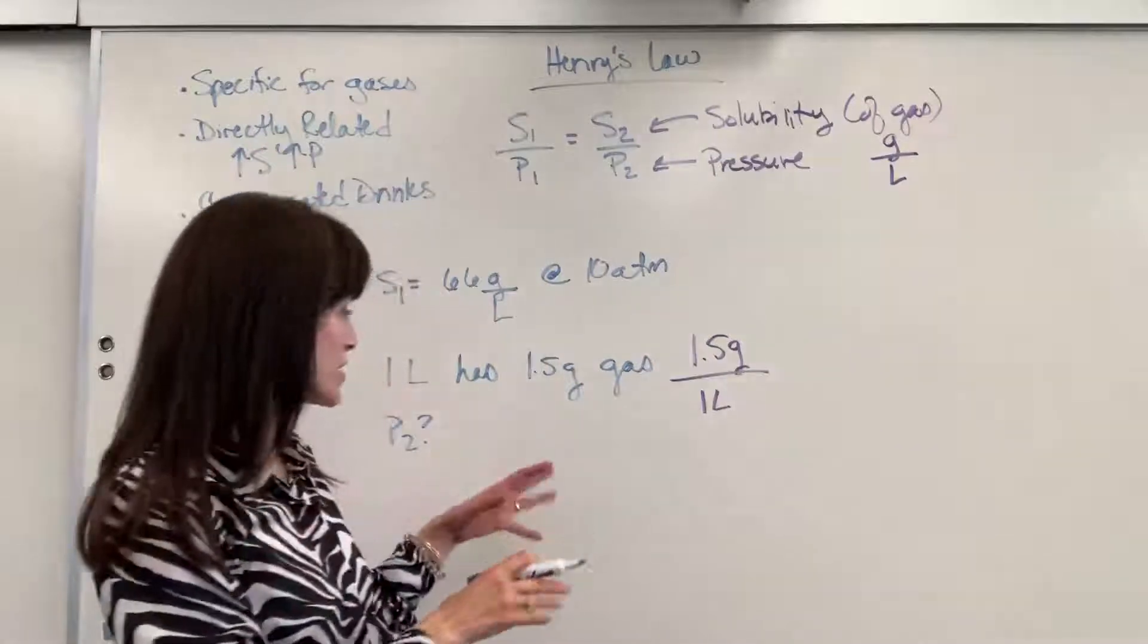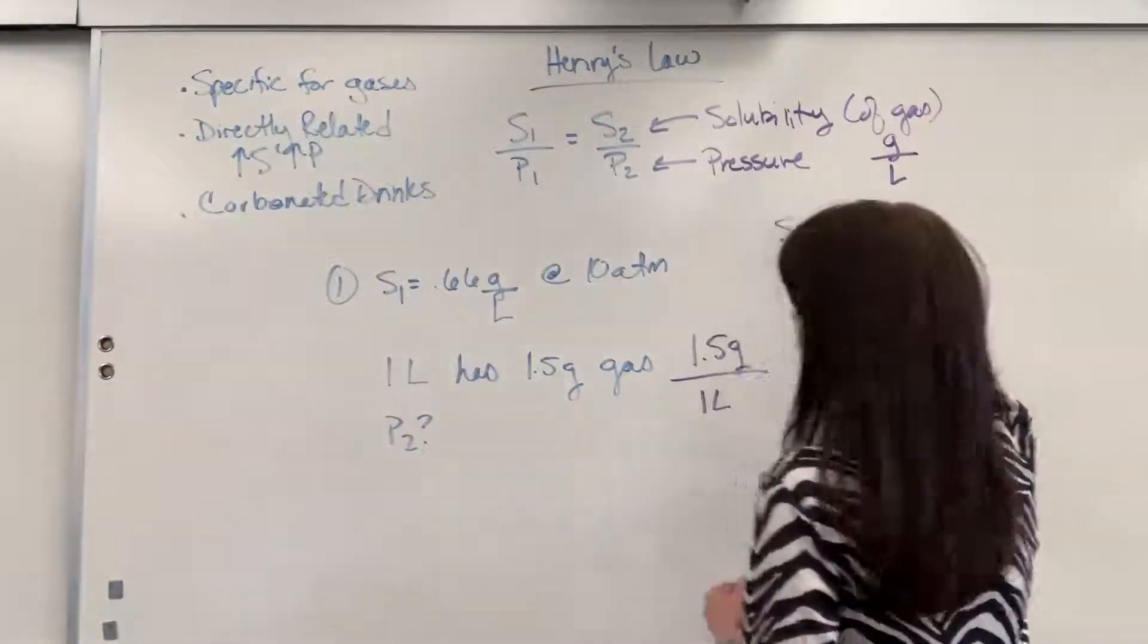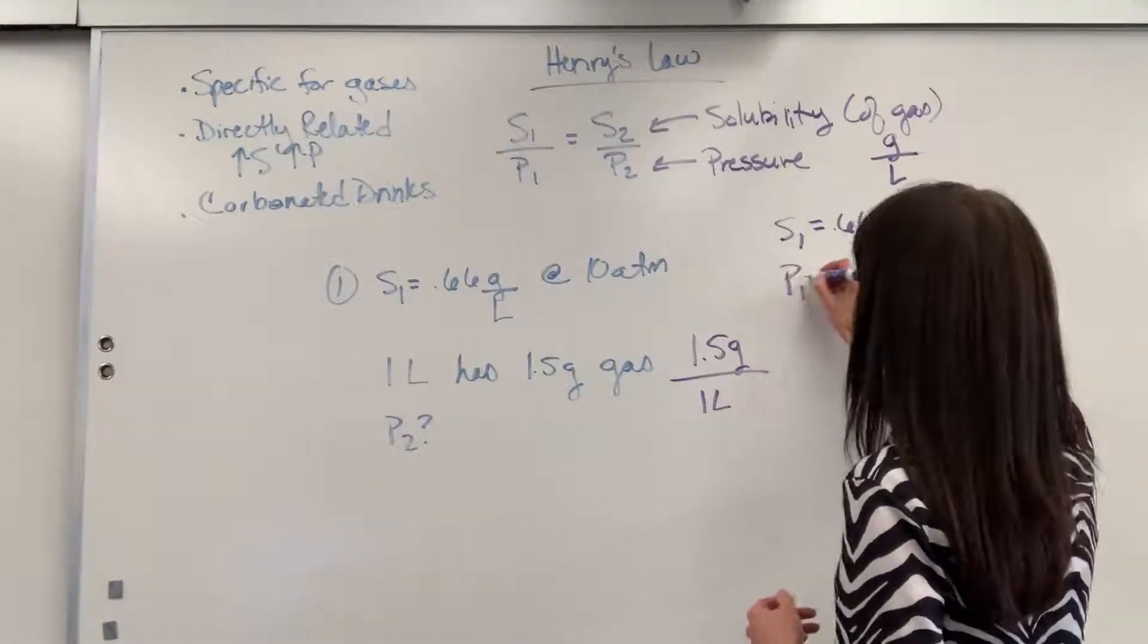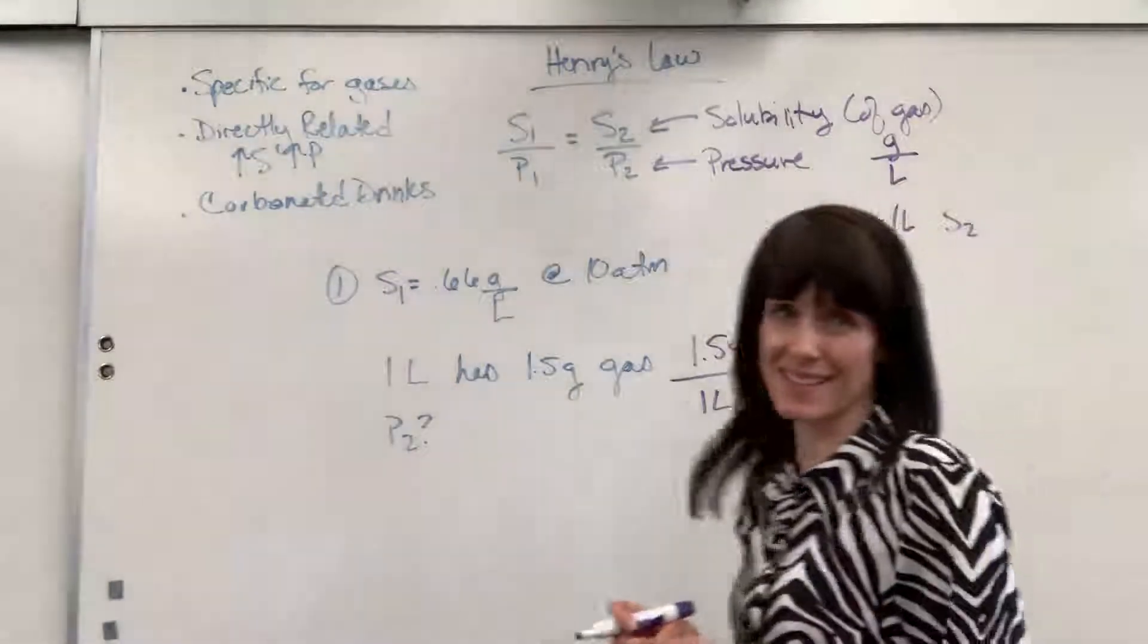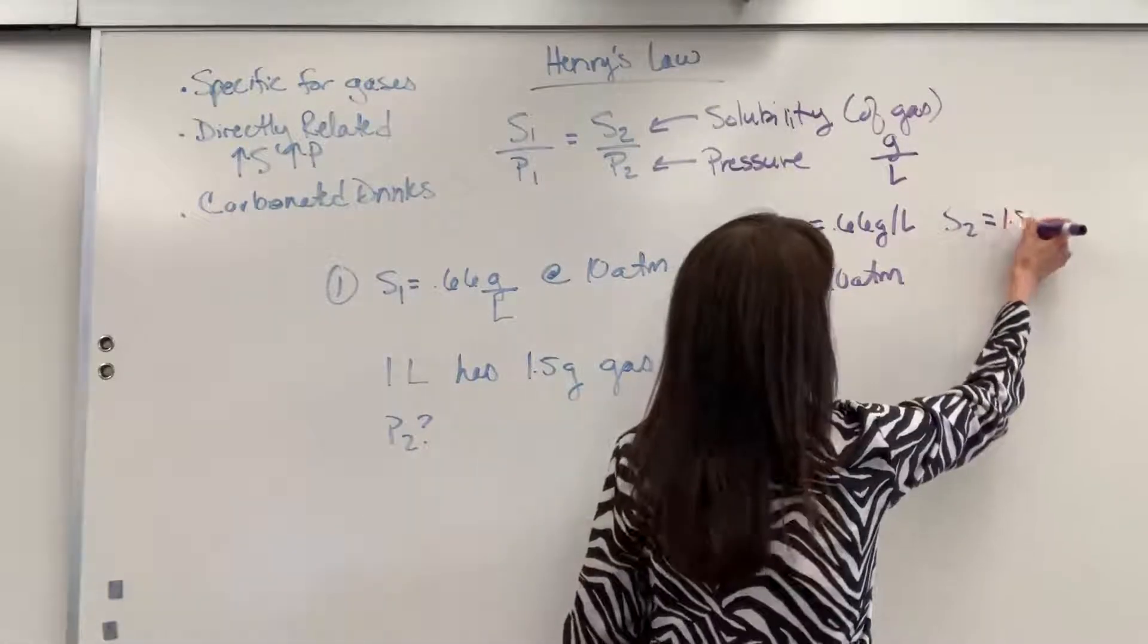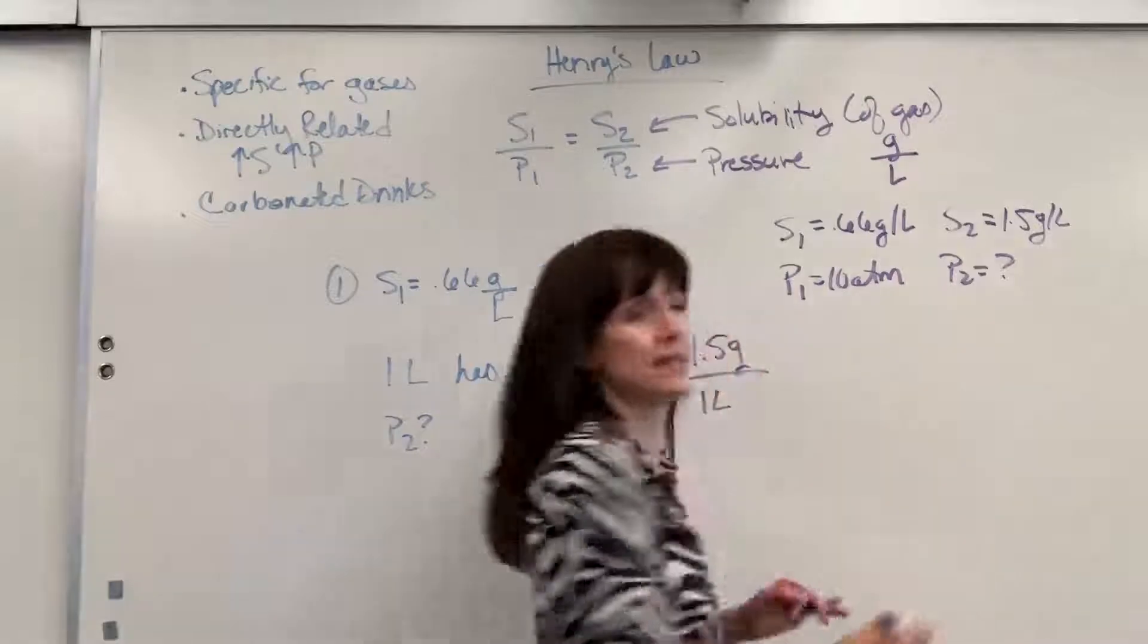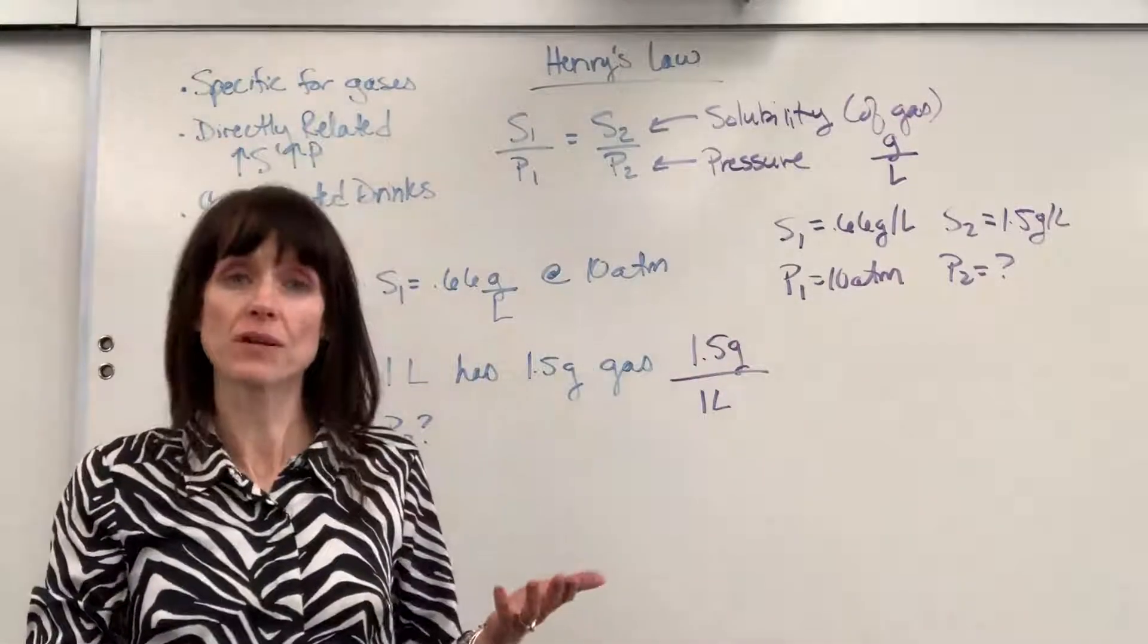So similar to our gas laws, I read my question. We're going to label everything. So we will have S1 is 0.66 grams per liter. P1 is 10 atm. My second solubility, so the new solubility, is going to be 1.5 grams per liter. And our question is, what is that final pressure right there? So then I identified my formula. Great. I know what that is right here.